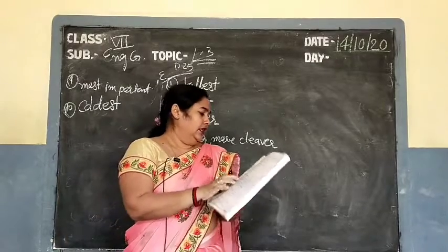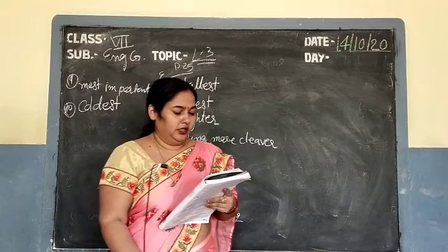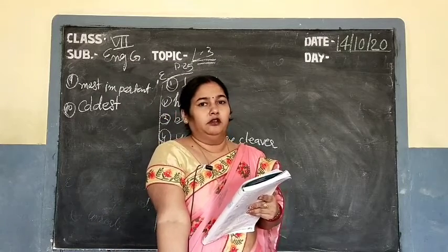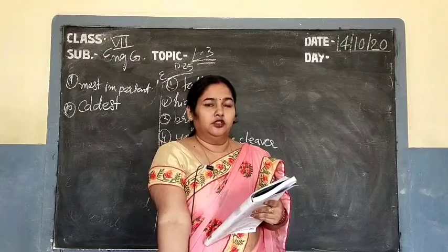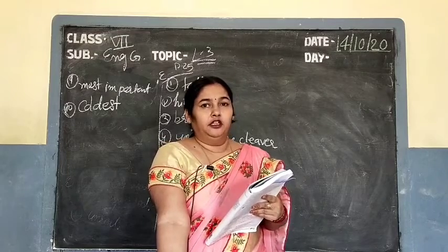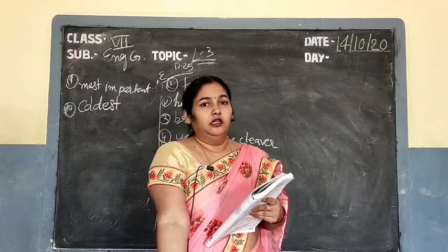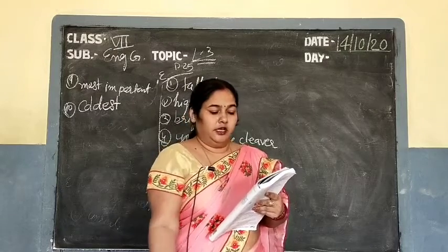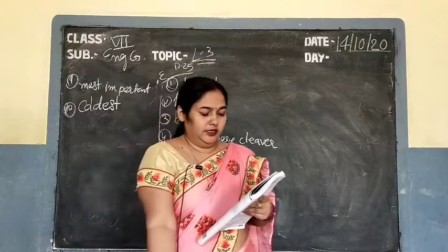Next is exercise g, where you have to create the degree comparison table yourself. For example: 'great' — greater — greatest. 'Short' — shorter — shortest. 'Bright' — brighter — brightest. 'Long' — longer — longest. In this way you have to make the degree table yourself. Do it yourself.